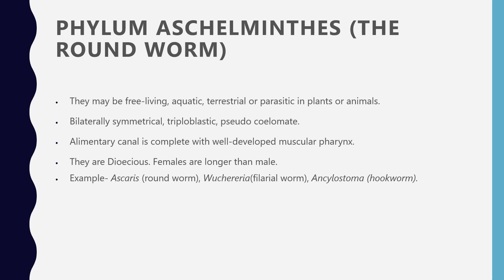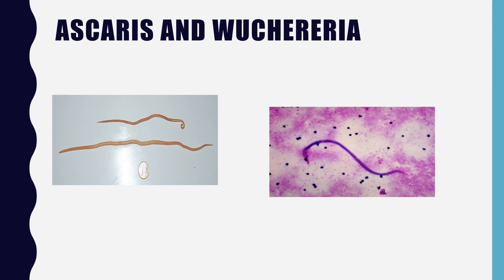Aschelminthes are roundworms. They may be free-living — aquatic or terrestrial — or parasitic in plants or animals. They have bilateral symmetry. An important feature is a complete alimentary canal with a well-developed muscular pharynx. They are dioecious, and the female is longer than the male. Examples include Ascaris, Wuchereria, and hookworms.